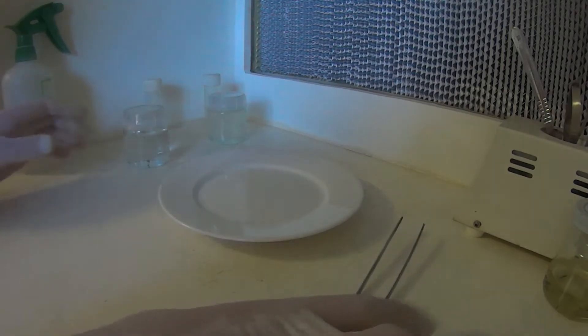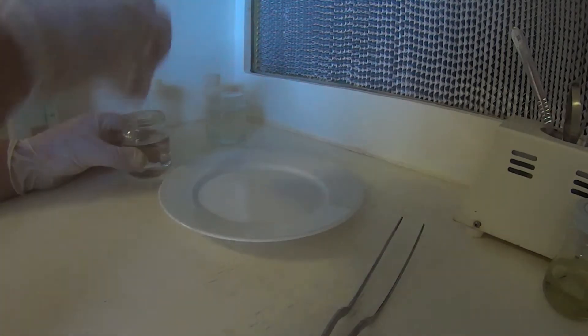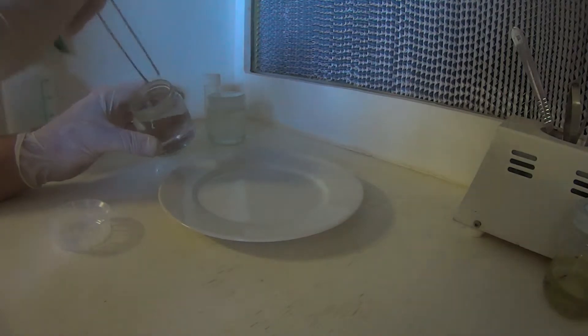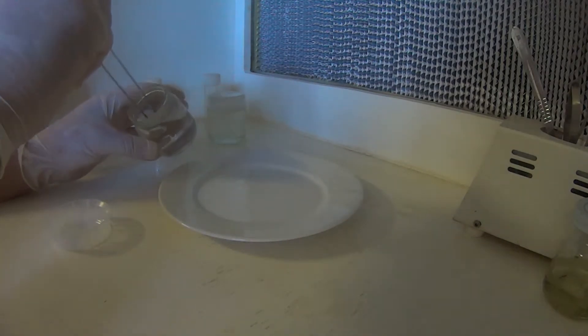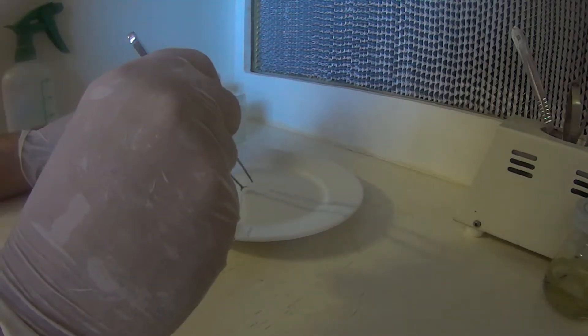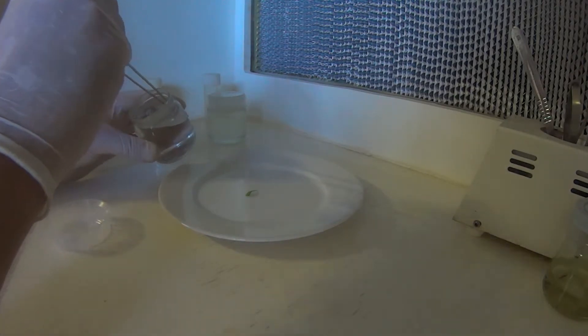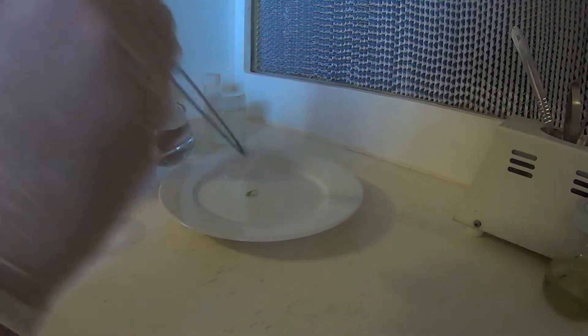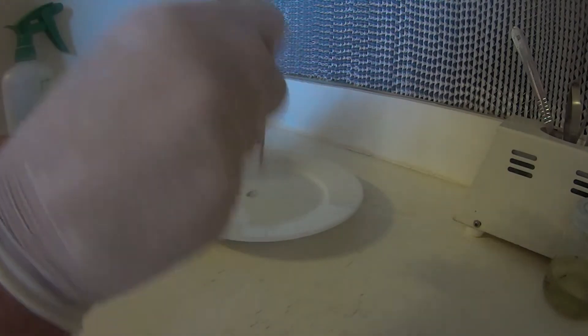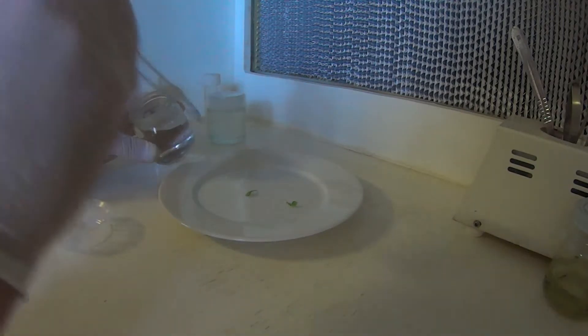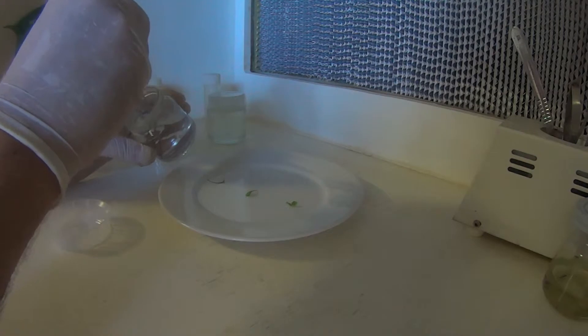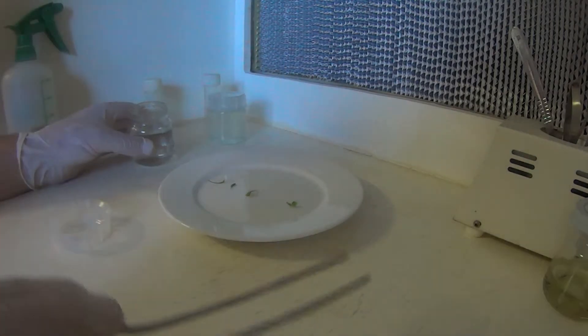All right, our Venus flytrap leaves have been rinsed in sterilized water now three times. So we'll remove them out. This is a sterile surface here on this plate as well. Try to get them out of here without squishing them.